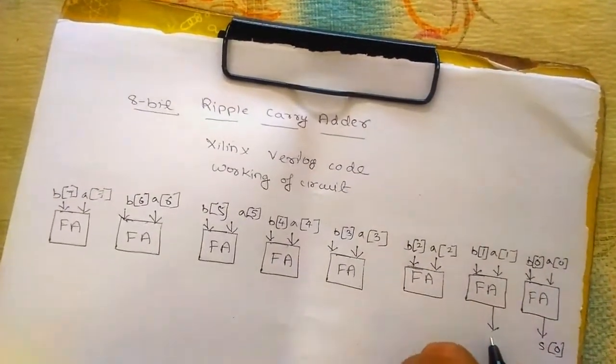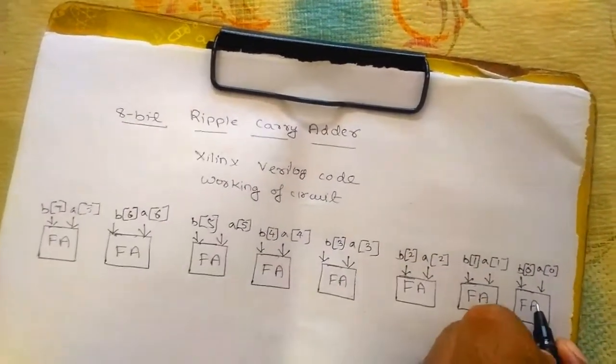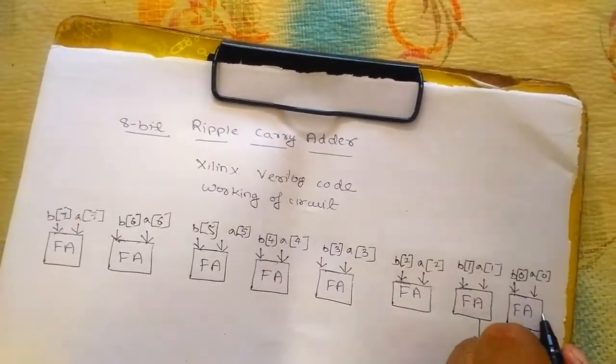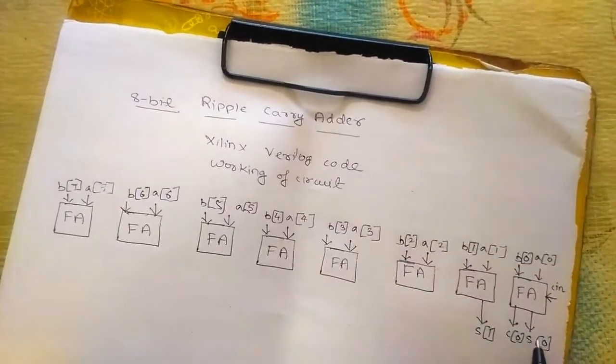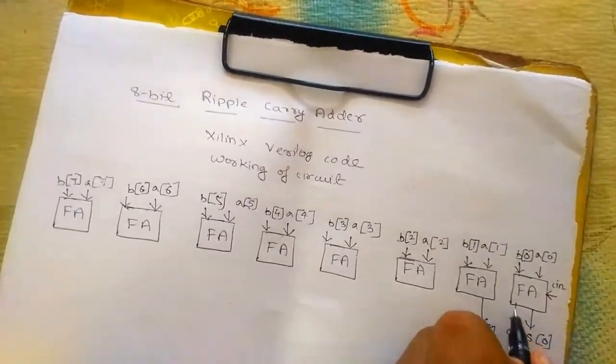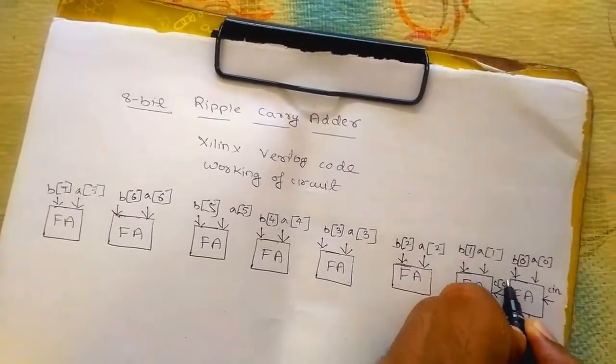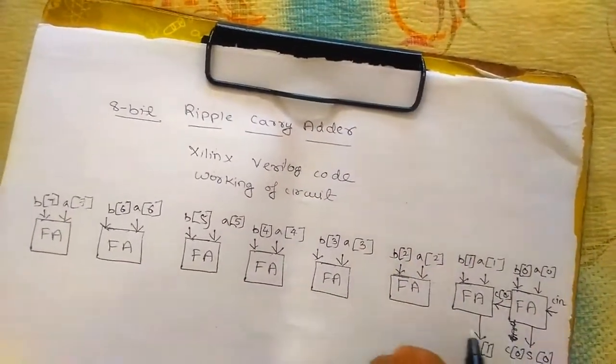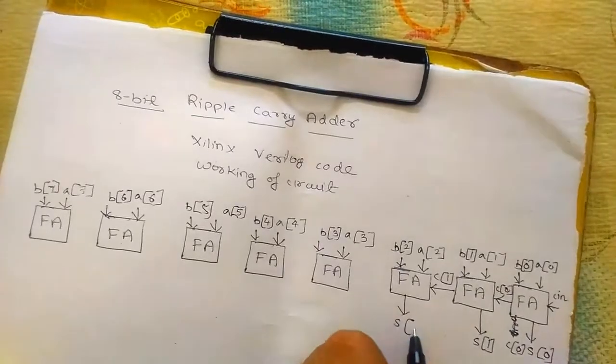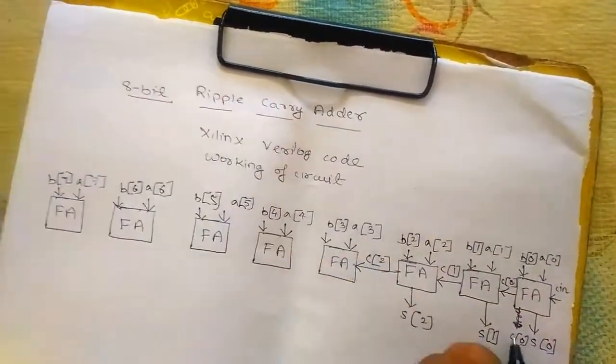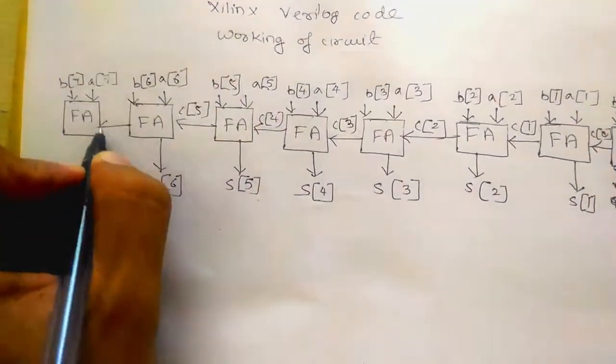The sum of the first full adder is s0. Next full adder gives sum s1 and one carry. A full adder has 3 inputs: a, b, and cin. It produces sum and carry outputs. This carry c0 provides the carry to the next full adder. Similarly we have s1, c1, s2, c2, sum3, sum4, sum5, sum6.